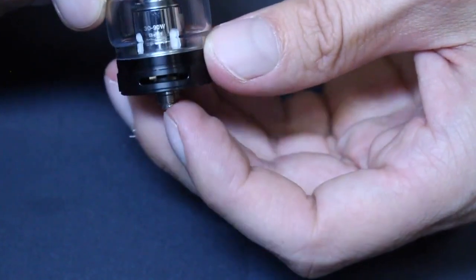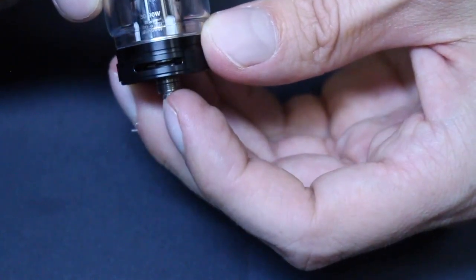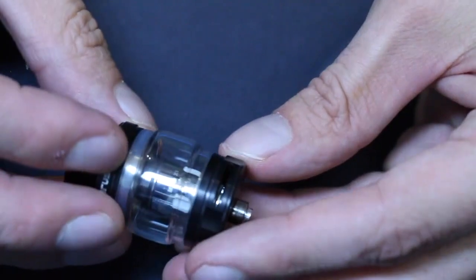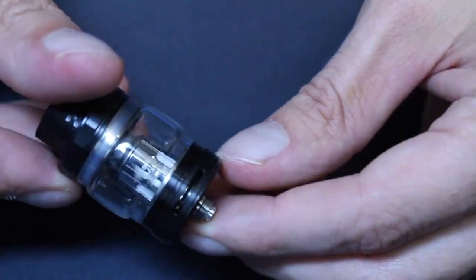This is a bottom airflow tank, which means it's designed for better flavor, although that does make it more likely to leak. I haven't had any problems at all with leaking though. I filled it up tons of times, leave it in my backpack where it gets tossed and turned, and no leaks whatsoever.